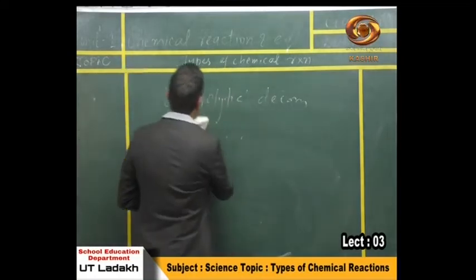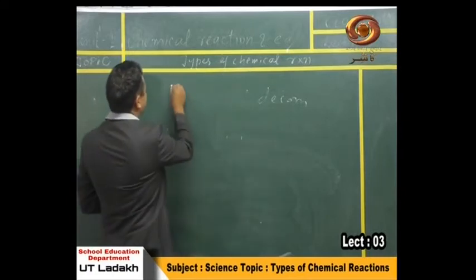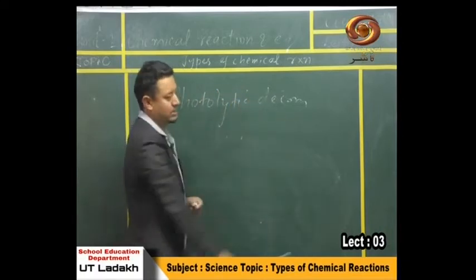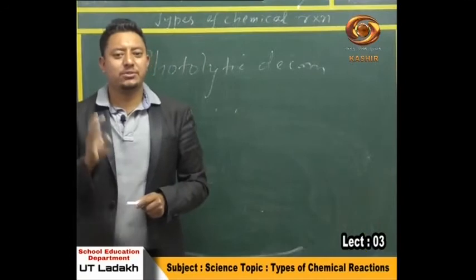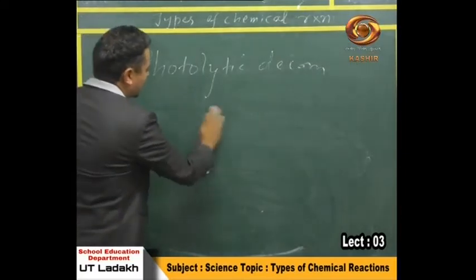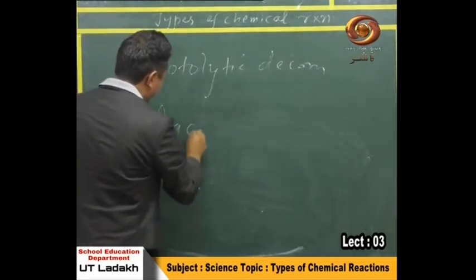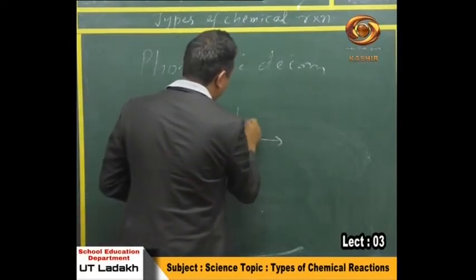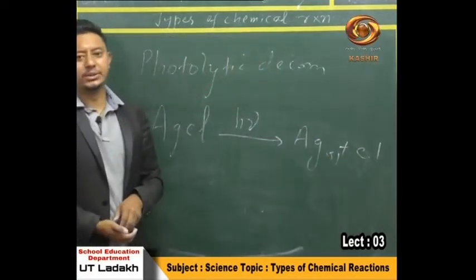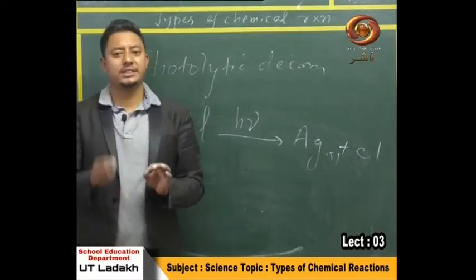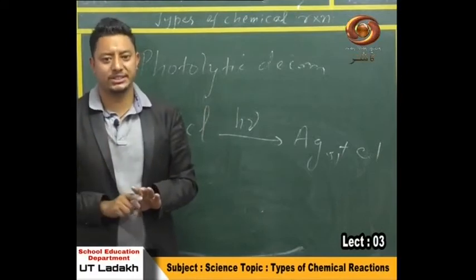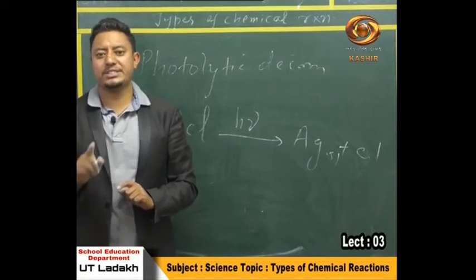The last type of decomposition reaction is photolytic decomposition. Photo means light — referring to sunlight or sunlight energy. Silver chloride, when you expose it to sunlight, gives you Ag plus Cl. Photolytic decomposition reactions are those in which decomposition happens in the presence of sunlight only.